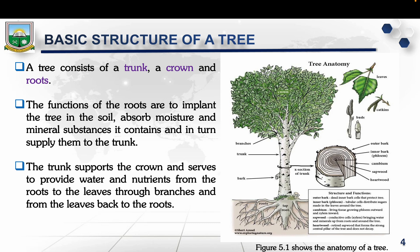The outer bark is the outer layer that mainly protects the tree from external damage. Beneath that is the inner bark, which consists of the phloem cells. Then there is the cambium layer — a very thin layer of living cells responsible for the tree's growth in diameter. The inner part is divided into sapwood and heartwood. The sapwood consists of xylem cells that bring water and minerals from the roots throughout the tree. The heartwood is old sapwood that has stopped transporting water — it is very thick, hard, and strong, serving as the pillar of the tree. The heartwood is more durable and more resistant to decay, making it very valuable in construction.